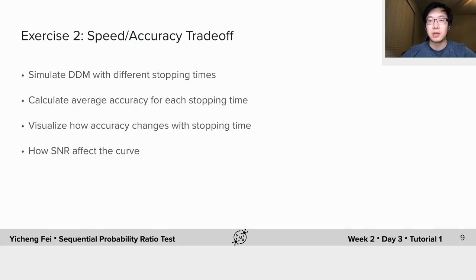Do this for a range of different stopping times and use our provided code to visualize how accuracy changes with stopping time. And don't forget to try different values of noise levels and see how that affects the curve.